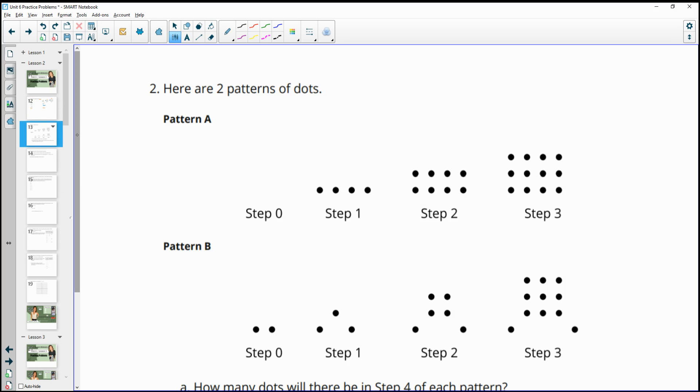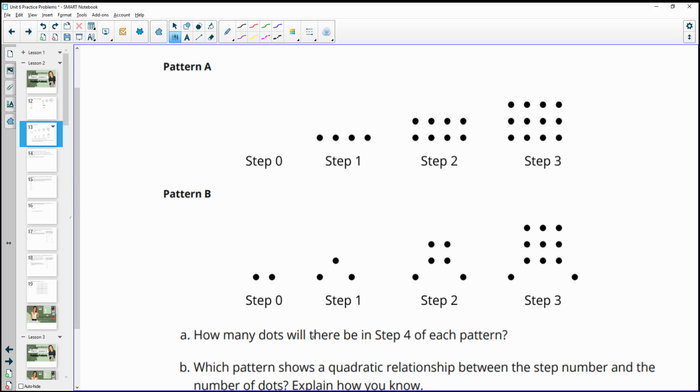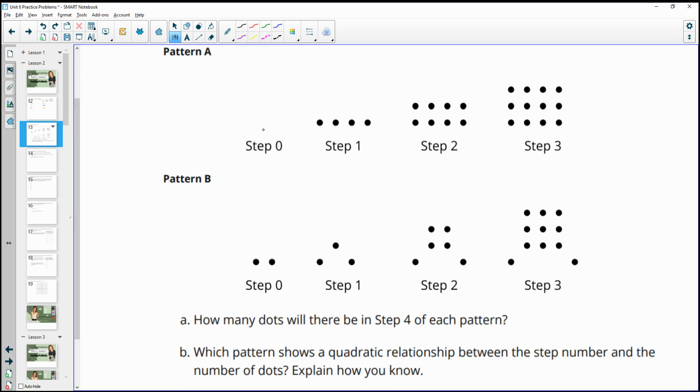Number two gives us two different dot patterns. It wants us to know how many dots will there be in step four of each pattern. In step zero in pattern A, there's none. Then there's four in step one. And then they add in this next row, so we get another four added here. And then in step three, we have the previous one and another row of four. So we see that they're adding another set of four, which is really just multiplication. This is step one times four, step two times four, step three times four. So in this next step, it's going to be four by four, which is 16.